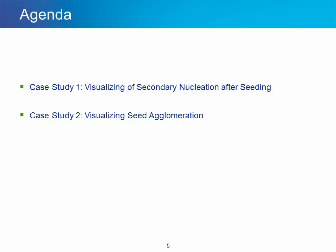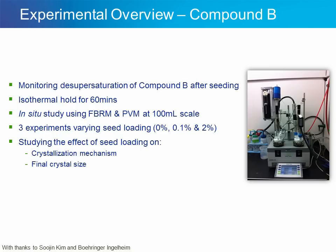In our next example, we'll actually visualize seed agglomeration. In this case, we used two technologies — ParticleTrack and ParticleView — in an EasyMax reactor. This looks at a seeded crystallization with an isothermal hold for 60 minutes, and three experiments were conducted with different seed loadings: an unseeded crystallization at 0%, followed by seed loadings of 0.1% and 2%. What we're trying to do here is study the effect of seed loading on the crystallization mechanism itself and on the final crystal size.